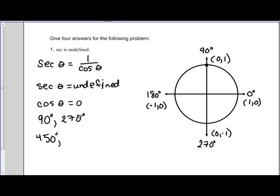And to get a coterminal angle to 270 degrees we're also going to add 360. And this time we're going to get an angle of 630 degrees.